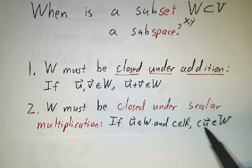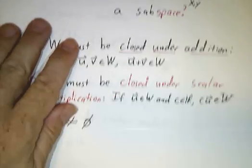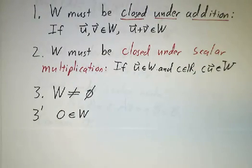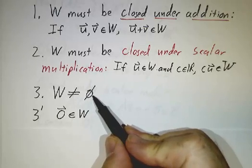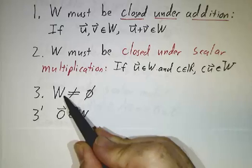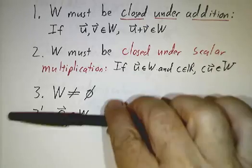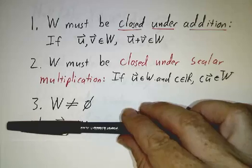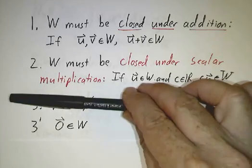Likewise, you know what it means to multiply something in W by a scalar, but the result isn't necessarily in W — so W must also be closed under scalar multiplication. Finally, you don't want W to be the empty set, which is equivalent to requiring the zero vector to be in W. If W contains any element and is closed under scalar multiplication, multiplying by zero gives the zero vector. Some people use these three axioms as stated, some use slightly different but equivalent forms; the zero-vector version is easier to check.